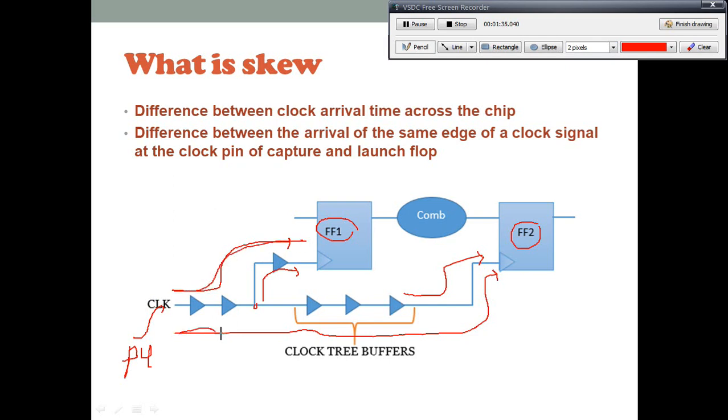Because there will be some clock buffers or some interconnect delays or some other external factors which will take some additional delays, and so that will bring additional delays in the capture path. So what happens, suppose this branch is taking 1 nanosecond and suppose this branch is taking 3 nanoseconds.